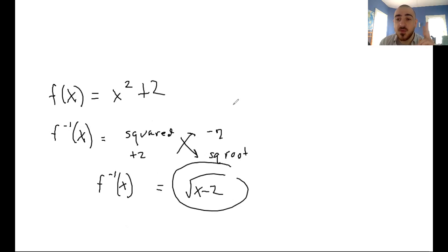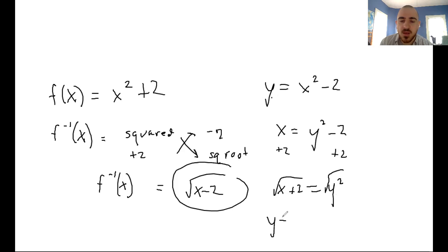The second method that we know how to do this is switch the x and y. I'm going to replace f of x with y: y equals x squared plus 2, and then switch the x and y. So x equals y squared plus 2, and then I'm going to solve for y. So I add two on both sides: x plus two equals y squared. Then I have to square root that. So y equals square root of x plus two. There really is like a plus and minus here, but don't worry about that too much.